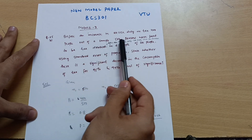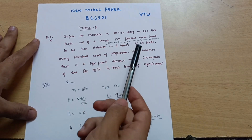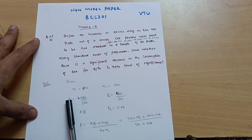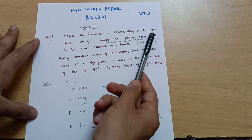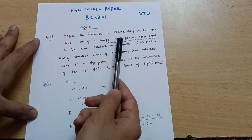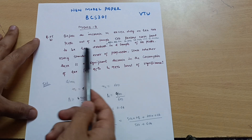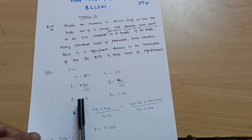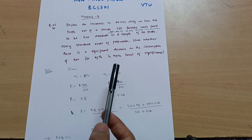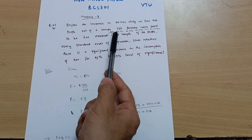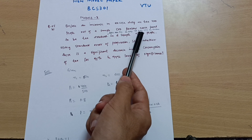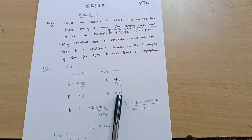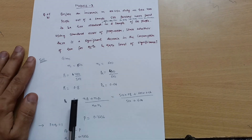Write down the given data. First sample: n1 = 500. Second sample: n2 = 600. For the first sample, 400 out of 500 people are tea drinkers, so p1 = 400/500 = 0.8. For the second sample, 400 out of 600 people are tea drinkers, so p2 = 400/600 = 0.66.